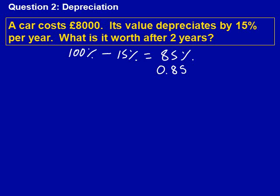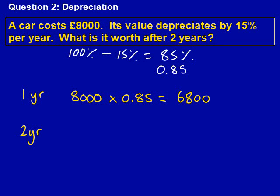We're now going to set up the question by writing one and two years on the side. In our first year, our sum is £8,000 — the cost of the car — times 0.85, our decimal. This gives us the answer of £6,800. So after the first year, the car is worth £6,800.